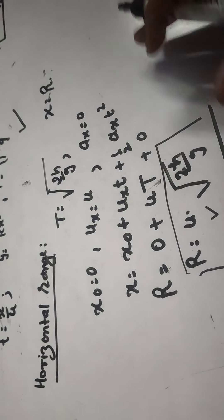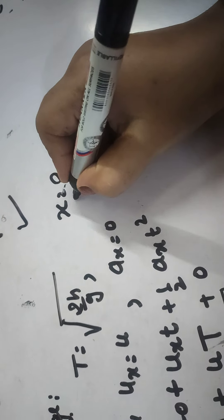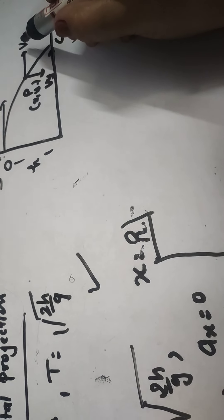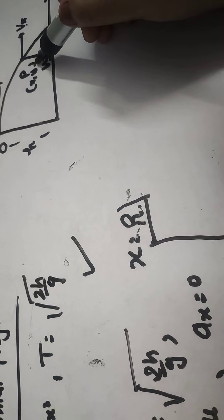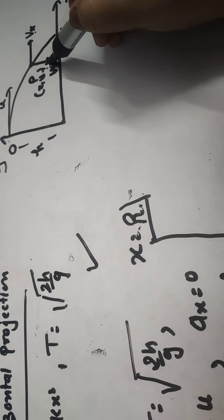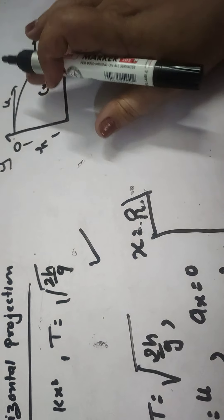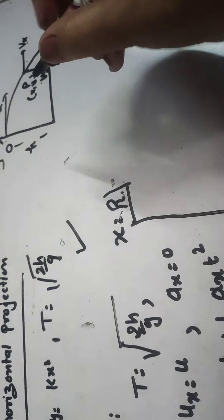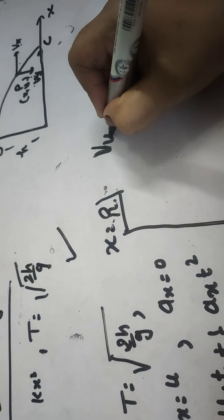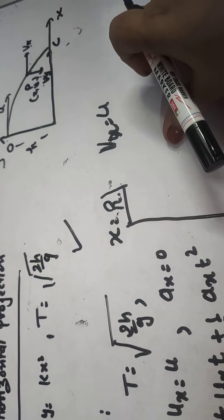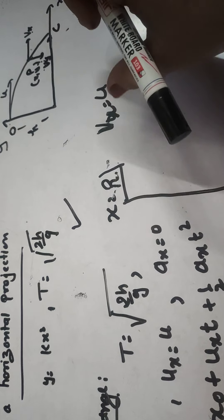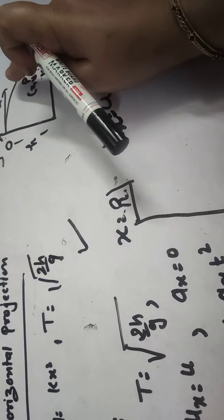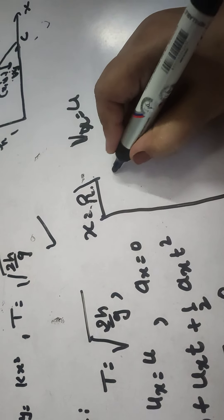Now let us find the velocity of the projectile at any instant. At any point P, the horizontal velocity is represented by VX and vertical velocity by VY. This resultant is the final velocity acquired by the projectile at point P. VX equals U — the same as the initial horizontal velocity — since horizontal velocity remains constant at every point.